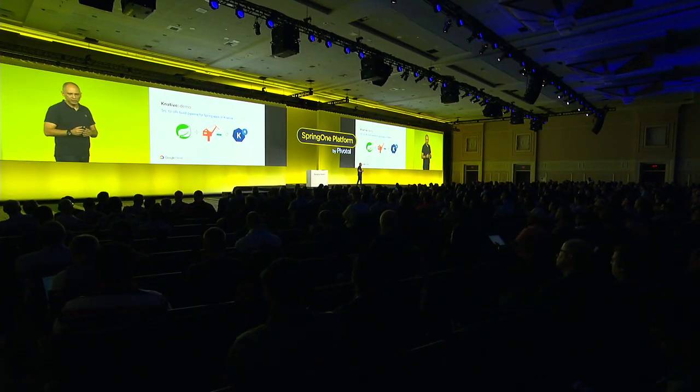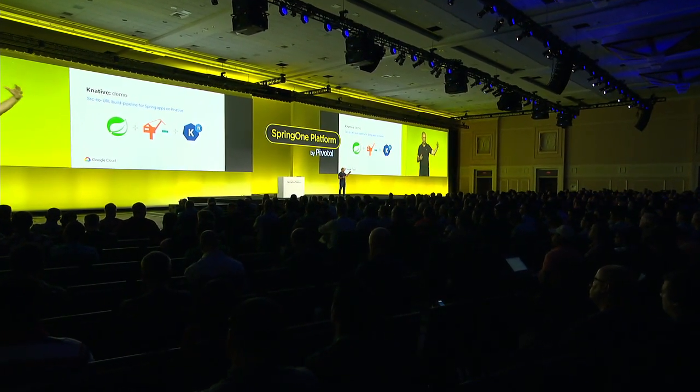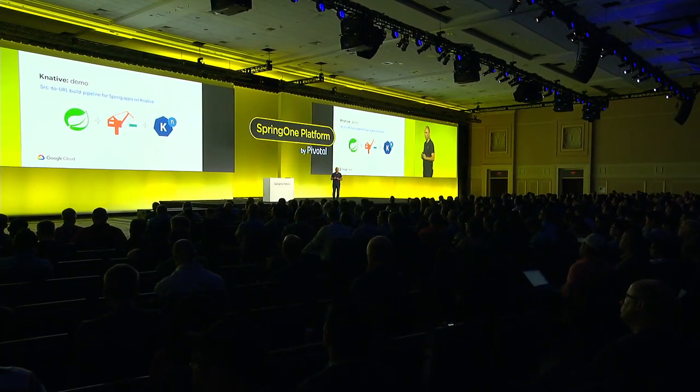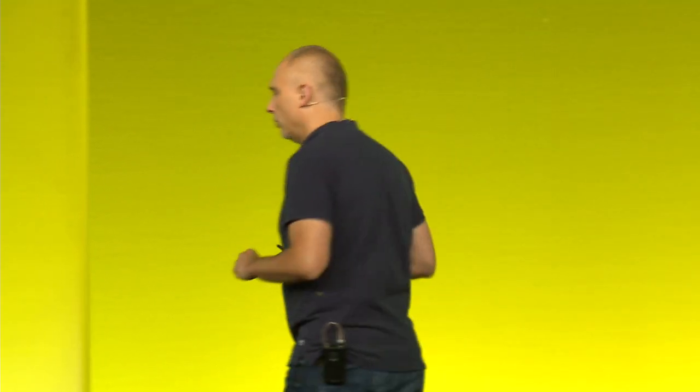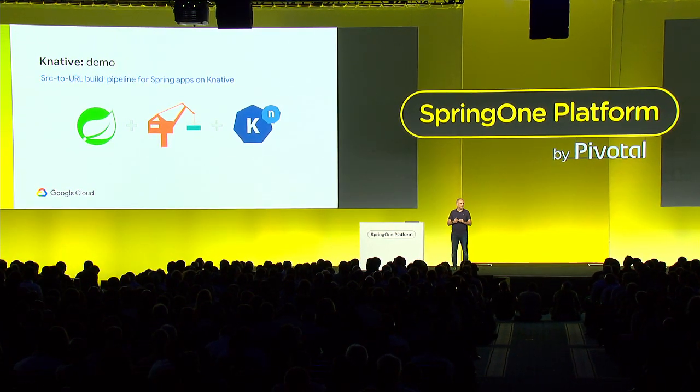I realize we haven't done a demo today, so I'm going to do one. I want to show a pipeline showcasing a Spring Java application — because we're at a Spring conference — all the way from source to URL. Mark Fisher is going to come later and talk about the eventing portion. In this case I'm going to focus on the build pipeline. I'm also going to showcase Jib, the Java image builder, another open source project from Google that streamlines a lot of the build process.